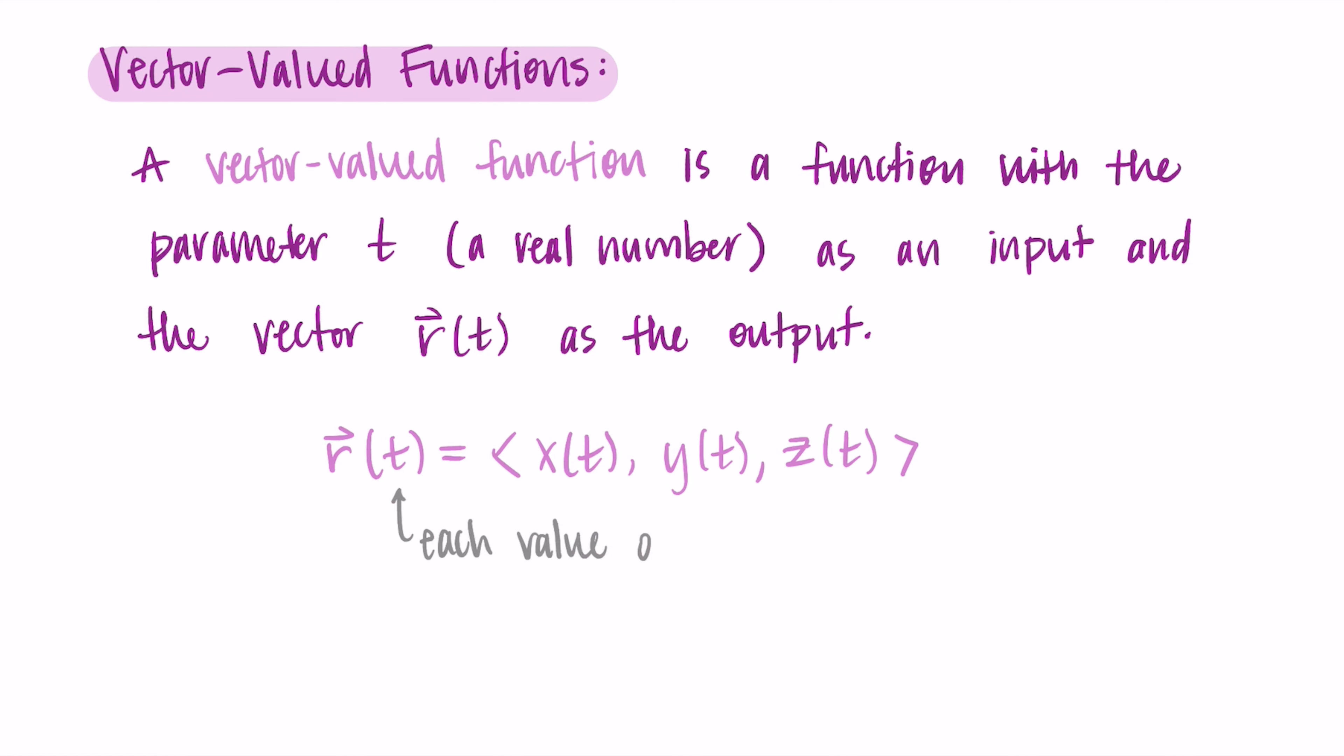What's especially noteworthy is that each value of t, so each input, is going to correspond to one vector, and that vector is pointing to a single point on the curve. So the way we create the curve is by collecting all of these vectors together, where each t value points to one of the points.